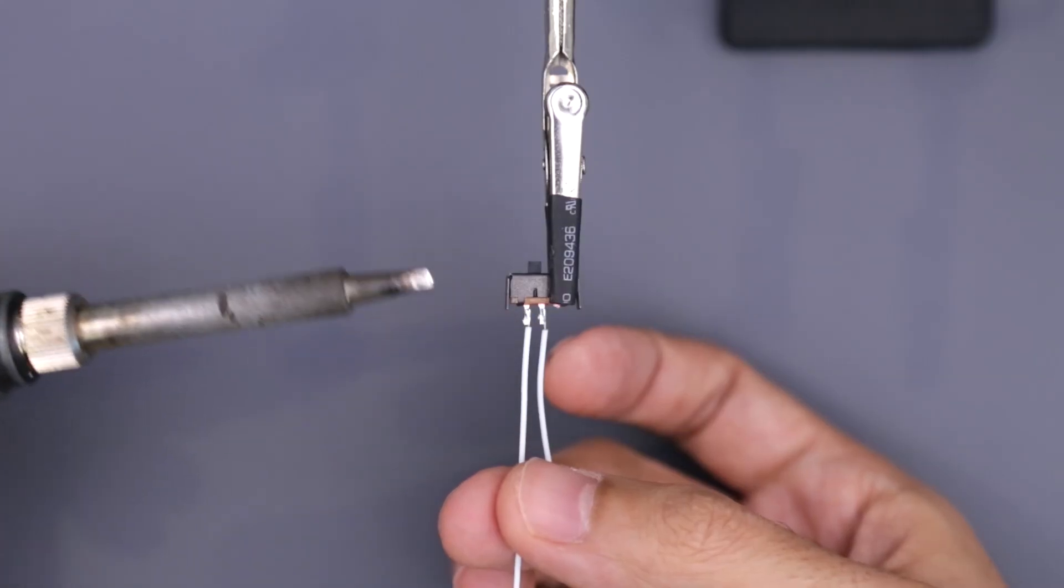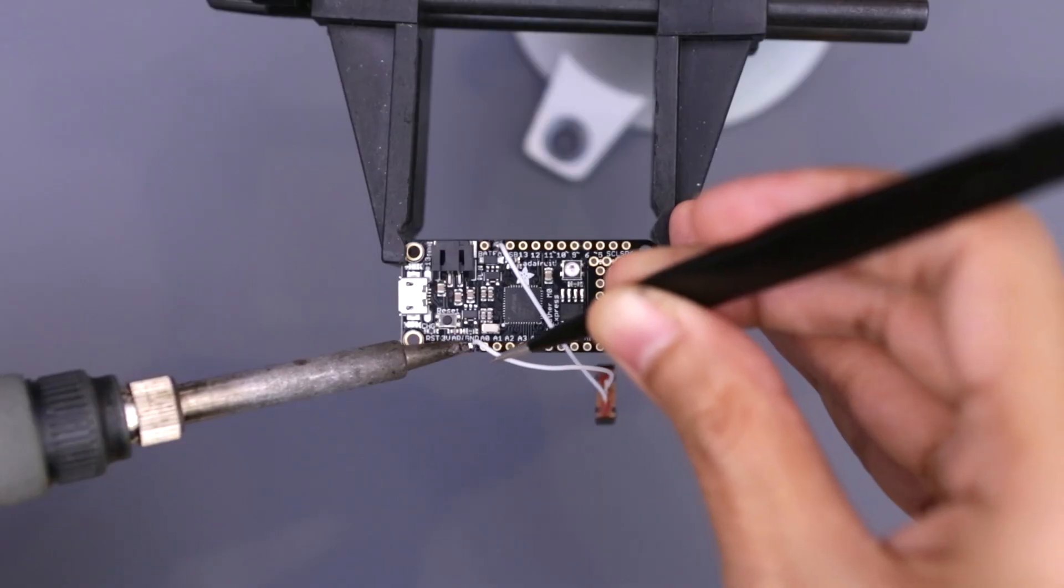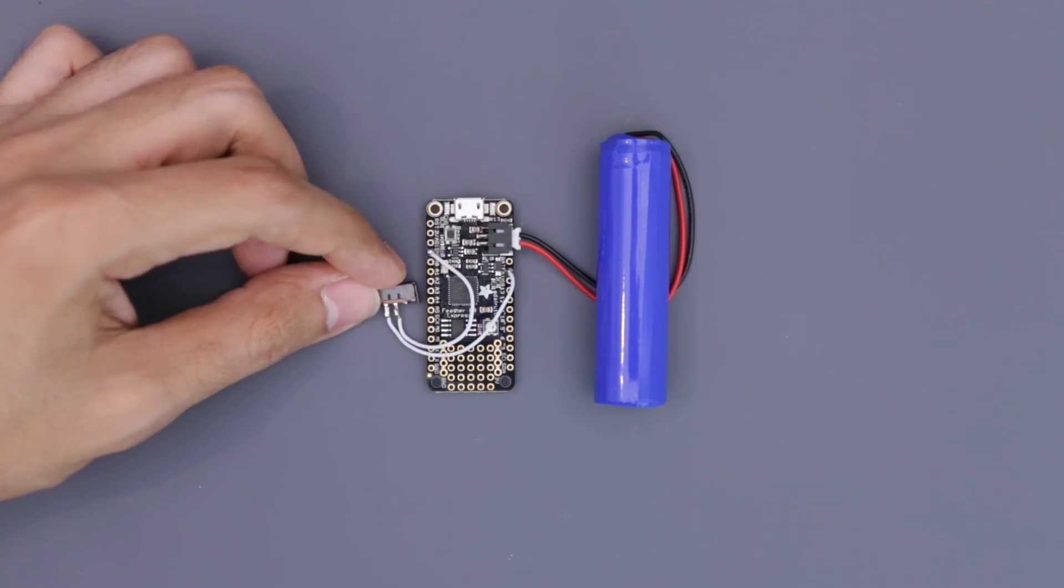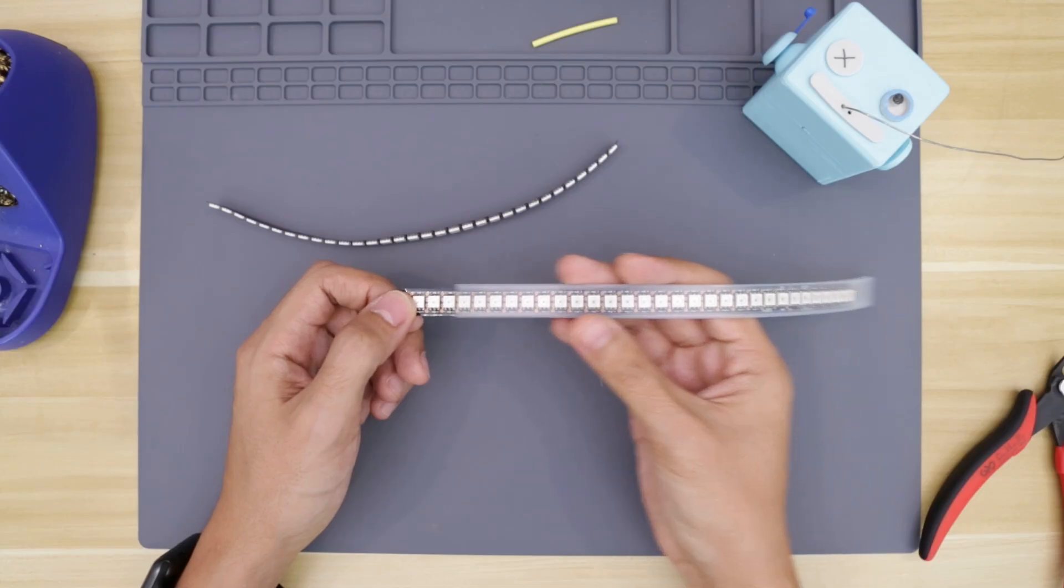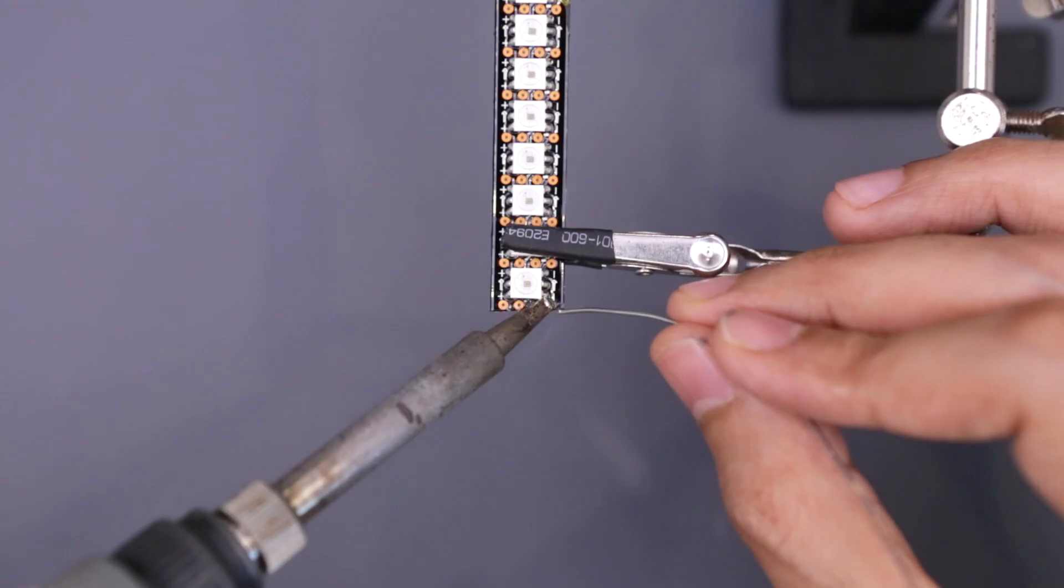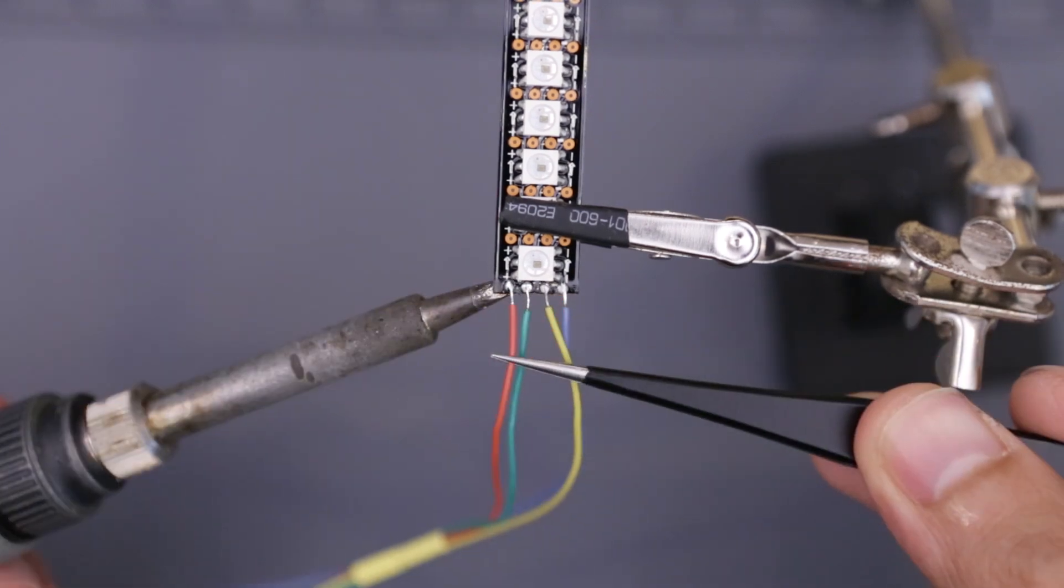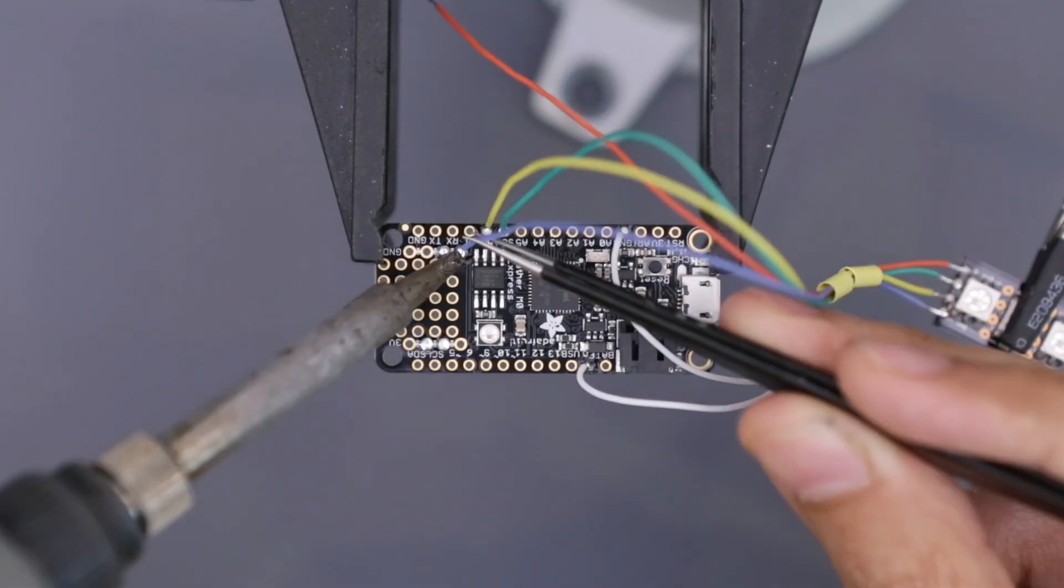A slide switch is wired up to the Adafruit Feather, so it can be powered on and off. This high-density DotStar LED strip can be cut down to size. You'll need to attach wires to the pads and solder them to the pins on the Adafruit Feather.